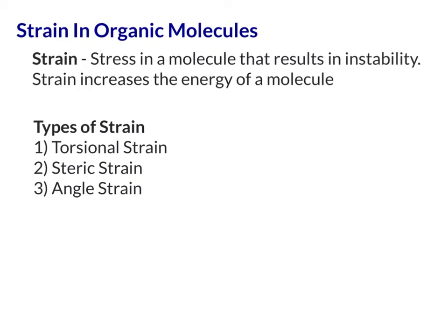In this video, we're going to talk about the primary sources of strain in organic molecules. Strain is a stress in the molecule that results in instability, and anytime there's instability, think of that as an increase in energy in the molecule. There are three types of strain we're going to discuss: torsional strain, steric strain, and angle strain.